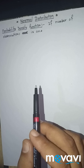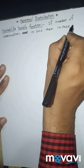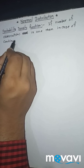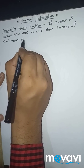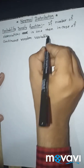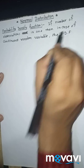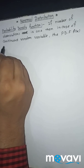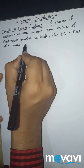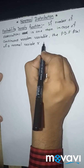First we define the probability density function of normal distribution. In the case of a continuous random variable, the probability distribution function f of x of a normal variate x is given by: